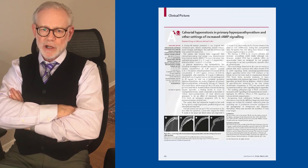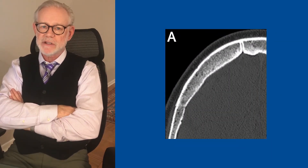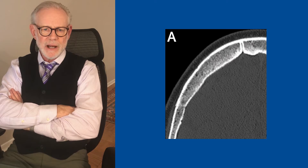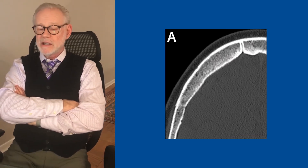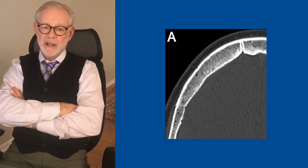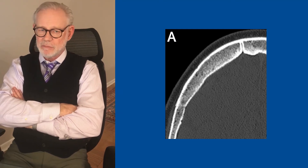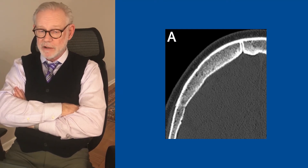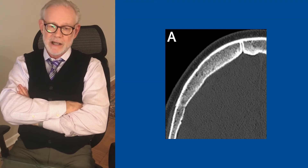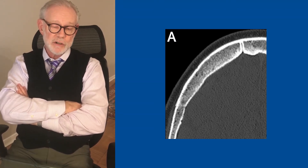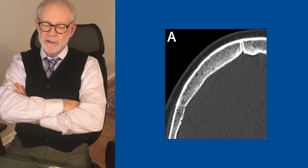As part of the workup, she also had a head CT because she gave us a history that she had had brain calcifications. The head CT revealed a thickened calvarium, which is something that can be seen in hyperparathyroidism — more commonly in secondary, tertiary, and especially tertiary hyperparathyroidism seen in renal failure.